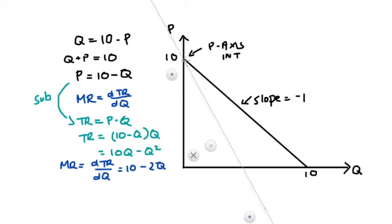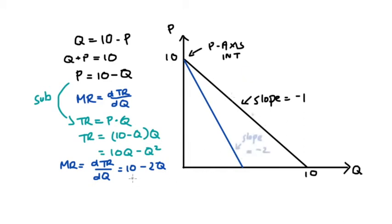You can see quite clearly that our marginal revenue function has the same price axis intercept — that's 10 — and double the slope, negative 2, as our demand function. This is going to mean that our quantity axis intercept for our marginal revenue curve will be exactly half of the quantity axis intercept of our demand curve, so in this case it will be 5. This is true of the marginal revenue curve for any linear demand curve — you can test it for yourself.